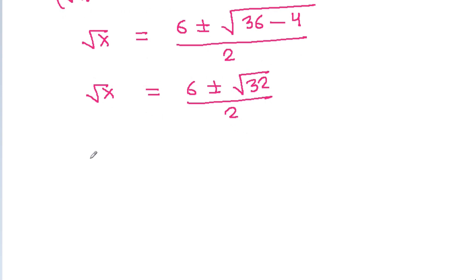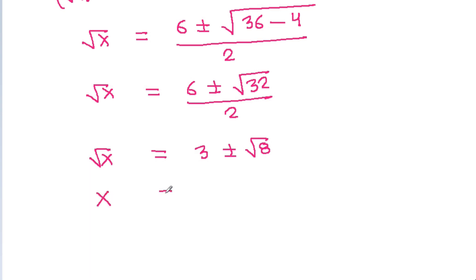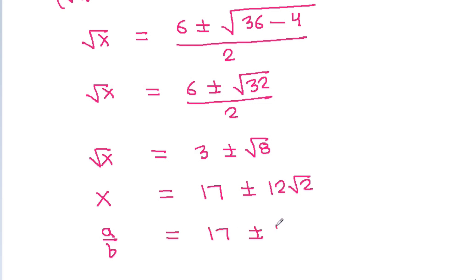Dividing by 2 gives root x equals 3 plus or minus root 8. Squaring both sides, x equals 17 plus or minus 12 root 2. Therefore a by b equals 17 plus or minus 12 root 2.